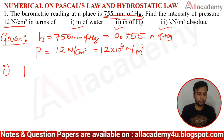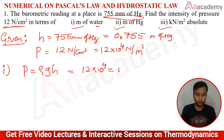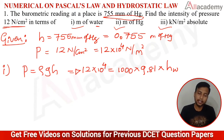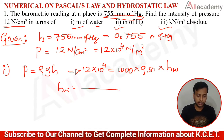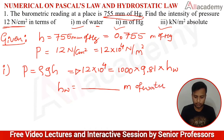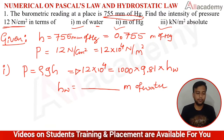For the head in terms of water, use P = ρgh with density of water (ρ = 1000 kg/m³). So 12 × 10⁴ = 1000 × 9.81 × Hw. Simplify: Hw = 12 × 10⁴ / (1000 × 9.81), which gives the answer in meters of water. Please calculate and share the answer in the comment section.